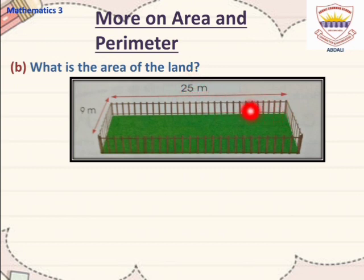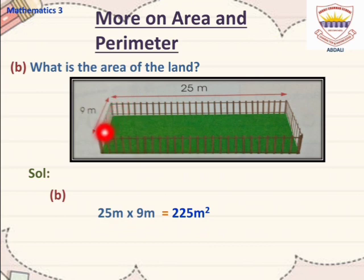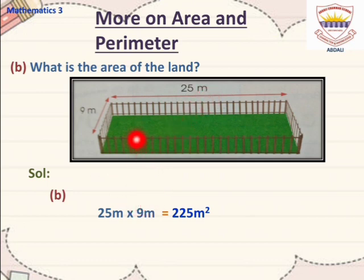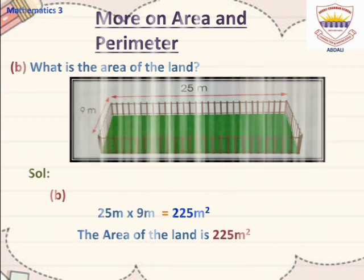The length of the land is 25m and the breadth is 9m. For finding the area, we multiply length with breadth. So we multiply 25m by 9m. When we multiply 25 by 9, we get 225m². The area of the land is 225m².